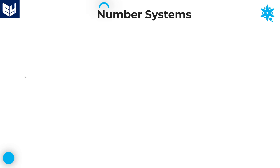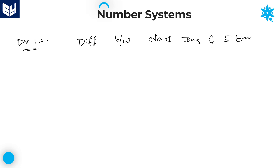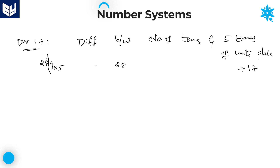Last and final: divisibility rule of 17. The difference between the number of 10s and 5 times the units place must be divisible by 17. Example: 289. Number of 10s is 28. 5 times the units place: 9 times 5 equals 45. Difference: 45 minus 28 equals 17. Since 17 is divisible by 17, the entire number 289 is divisible by 17.